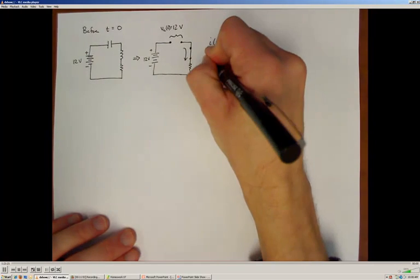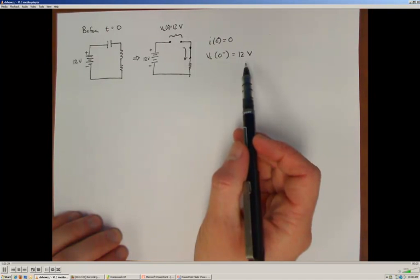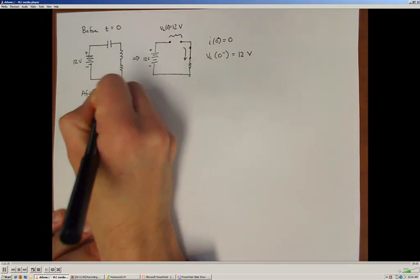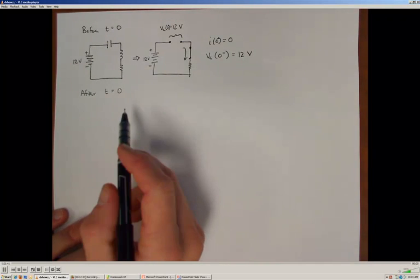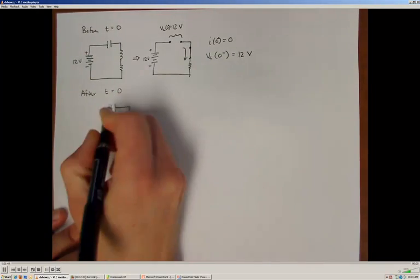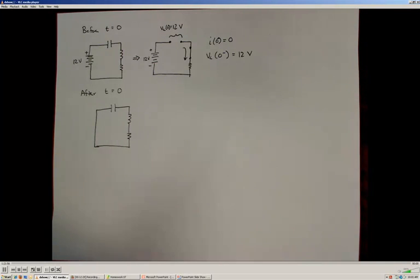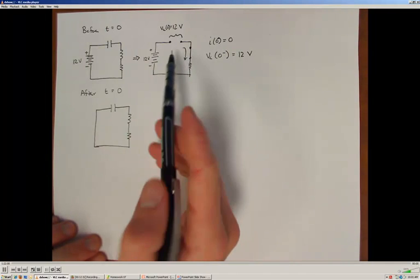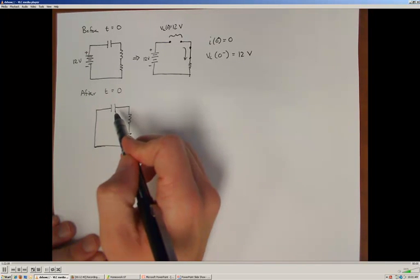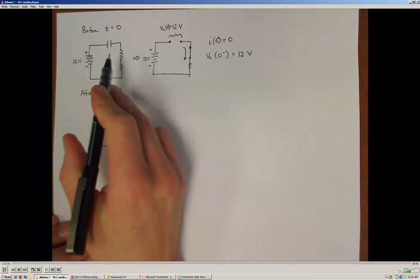Right after time equal to zero, things change. The new circuit is the inductor, resistor, and capacitor all in series, but no longer connected to a voltage supply. To determine how the current and potentials will change, we rely on the properties of the capacitor and inductor. Just before the switch changes, there is no current flowing through the inductor.